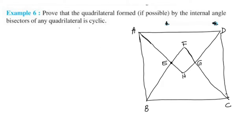Example 6: The quadrilateral formed by the internal angle bisectors of any quadrilateral is cyclic. If you have one quadrilateral, the internal angle bisectors form a quadrilateral that is cyclic.